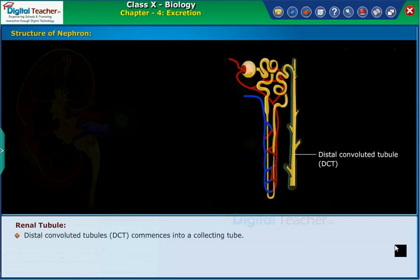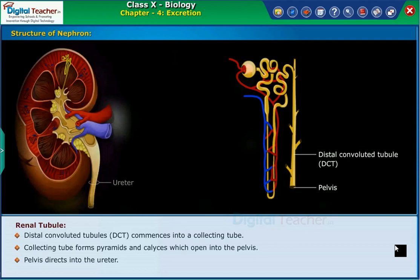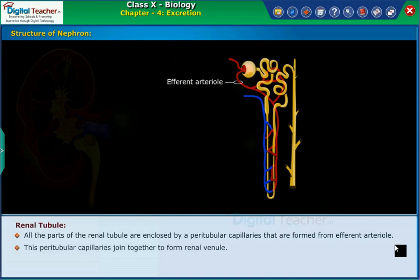The distal convoluted tubule (DCT) opens into a collecting tube. The collecting tube forms pyramids and calyces, which open into the pelvis. The pelvis directs into the ureter. All parts of the renal tubule are enclosed by peritubular capillaries formed from the efferent arteriole. These peritubular capillaries join together to form the renal venule.